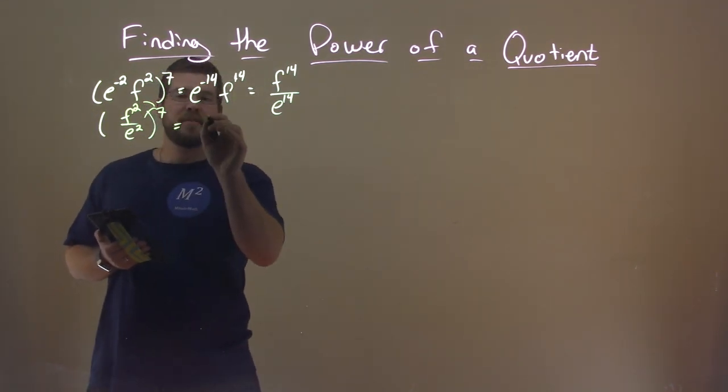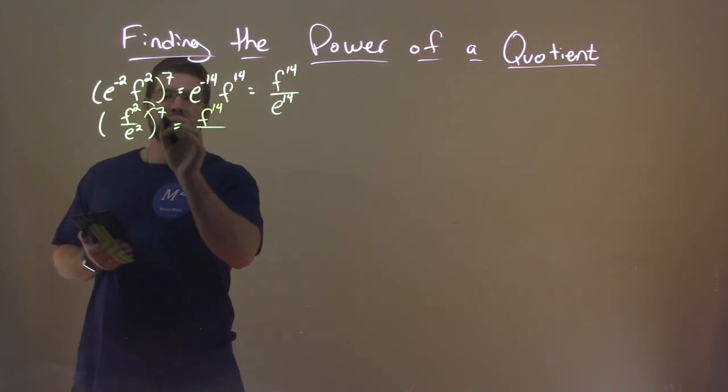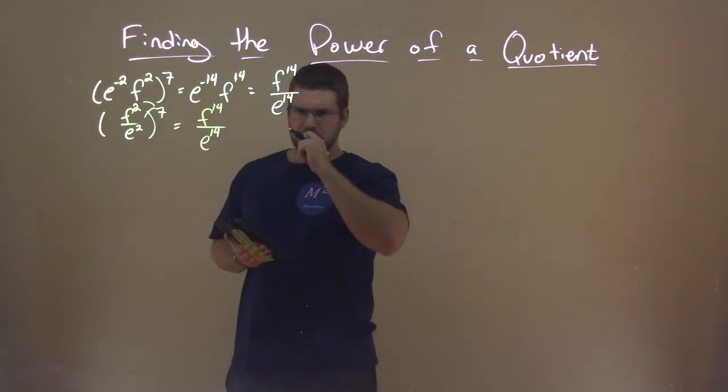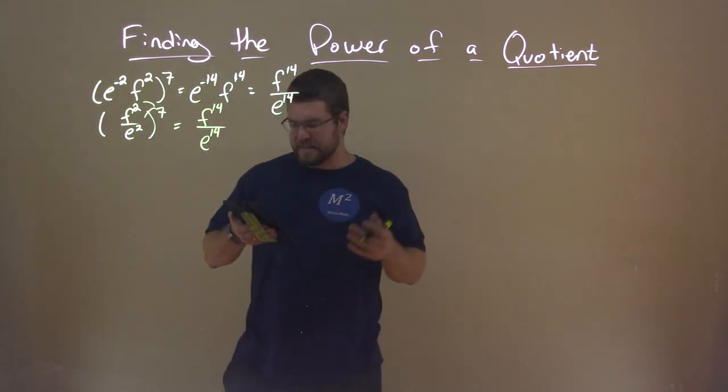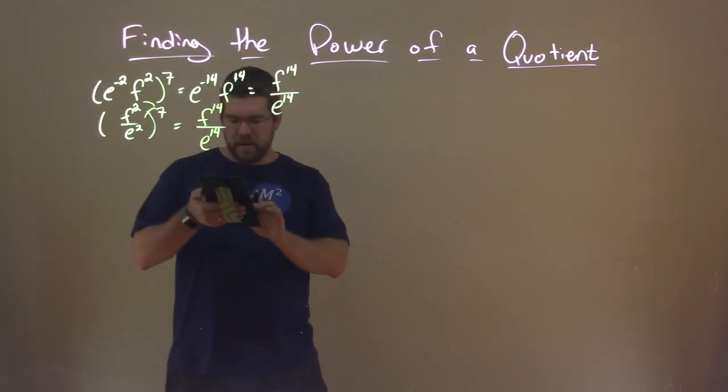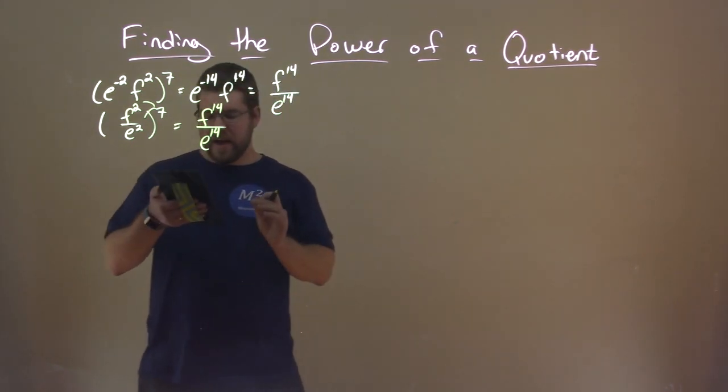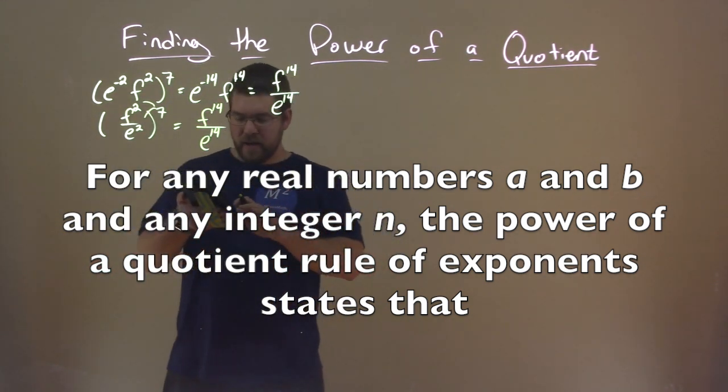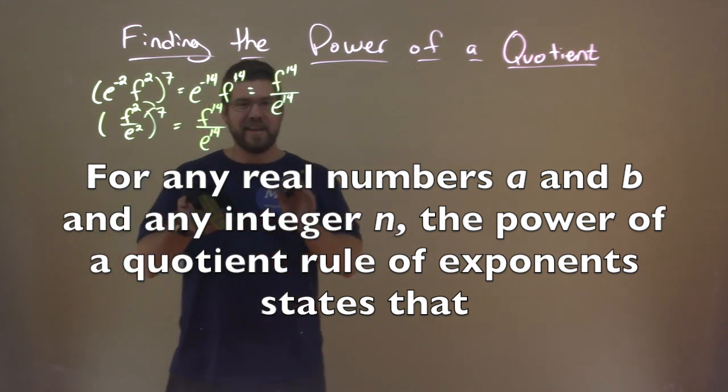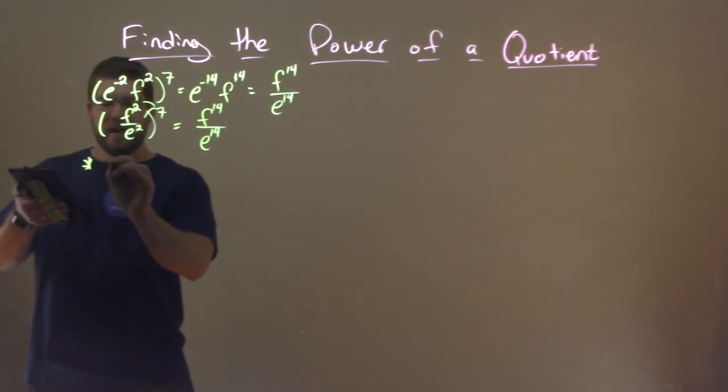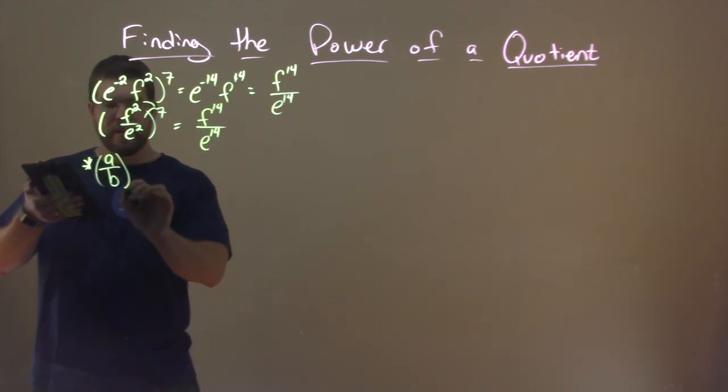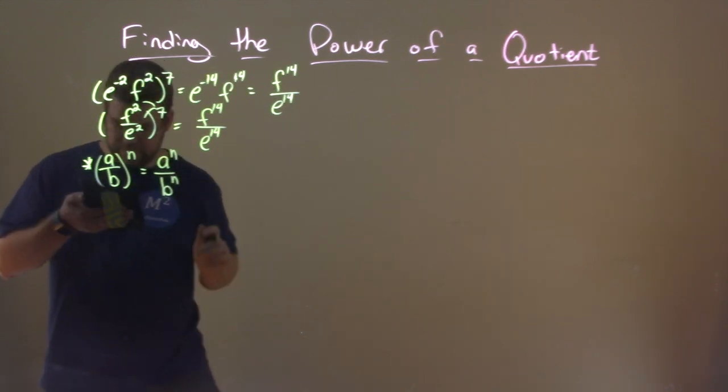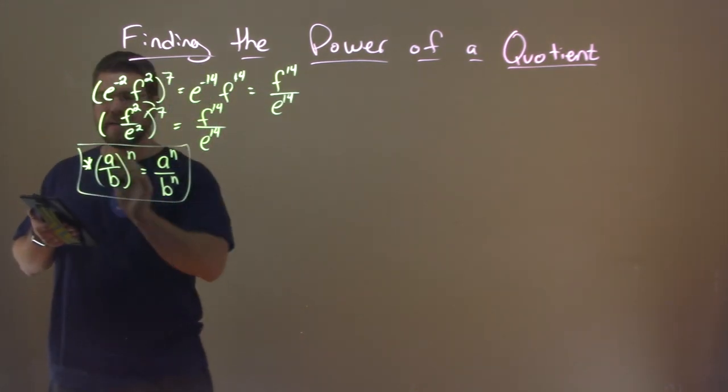2 times 7 is 14. So we have f to the 14th power over 2 times 7 again, 14, e to the 14th power. And we can see that these two results are the same. So this is really what this rule is telling us here. The power of a quotient rule of exponents is, for any real numbers a and b and any integer n, the power of a quotient rule of exponents states that a over b to the n power is equal to a to the n over b to the n.